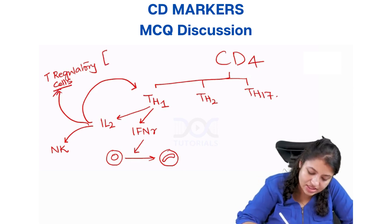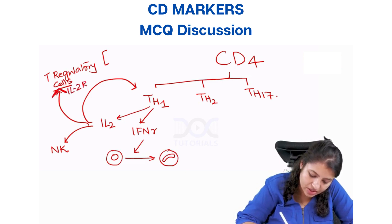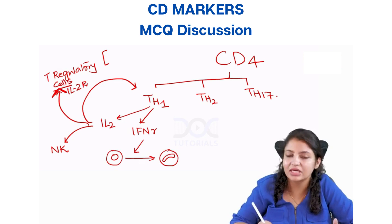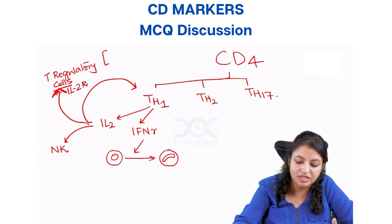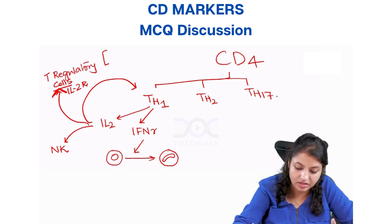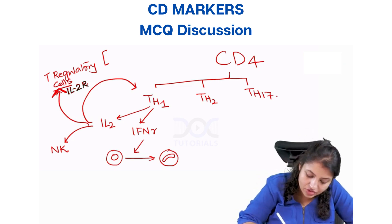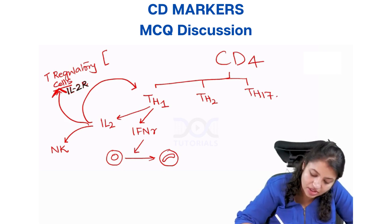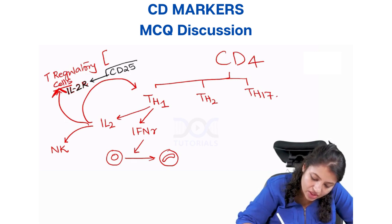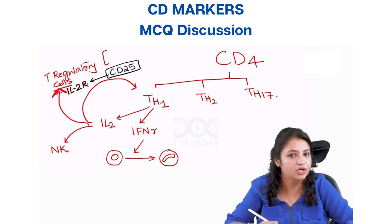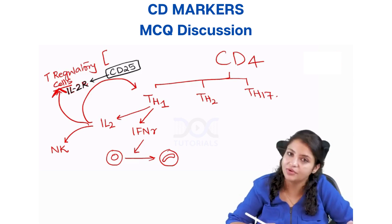T regulatory cells have receptors for interleukin 2, so they have interleukin 2 receptors. Th1 releases interleukin 2, and interleukin 2 receptors are present on regulatory T cells. This interleukin 2 receptor can be identified by a CD marker called CD25. So CD25 is a marker to identify interleukin 2 receptors which are present on regulatory T cells.